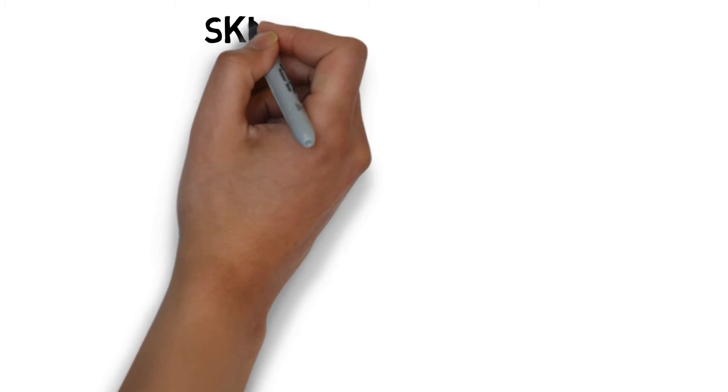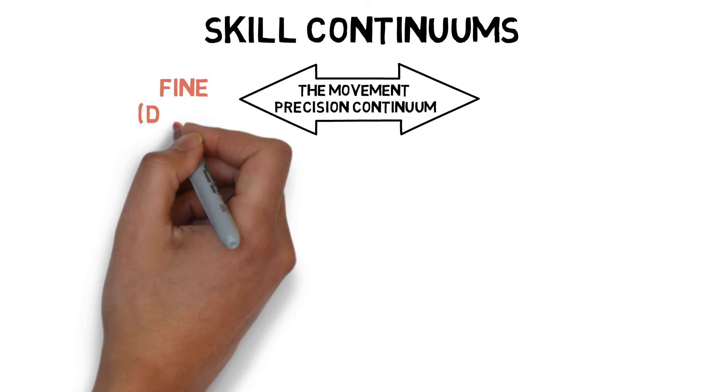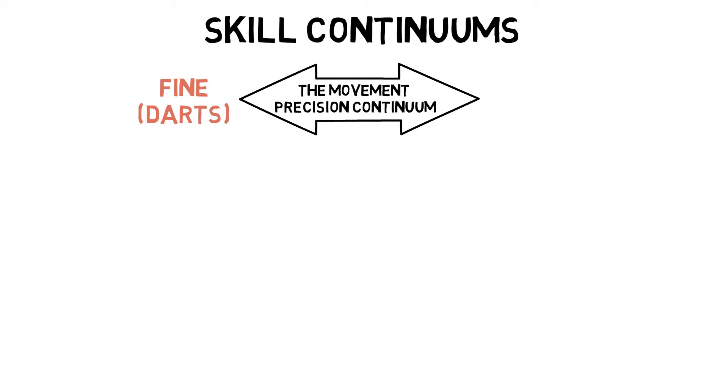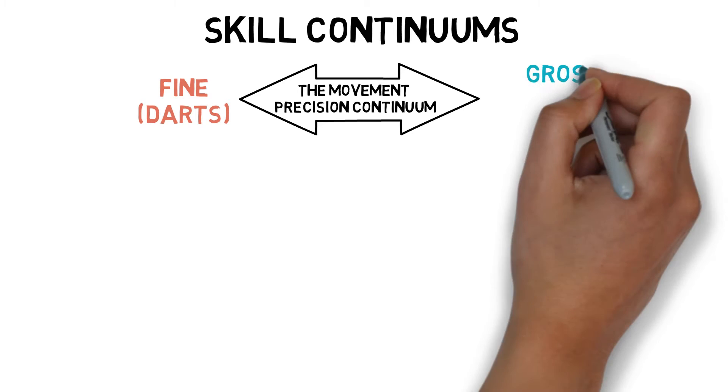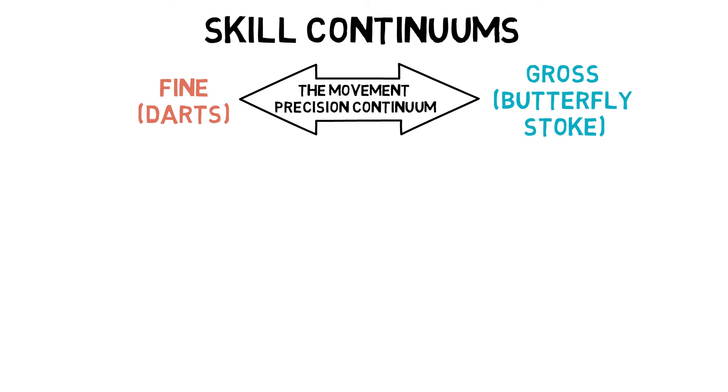There are different continuums relating to different types of skills. The movement-precision continuum deals with fine skills, which are coordinated small movements such as throwing a dart, and gross skills, which are large dynamic movements such as a butterfly stroke.